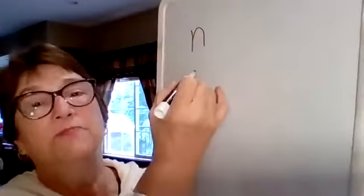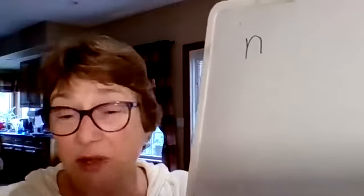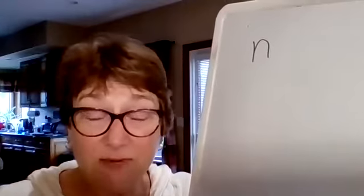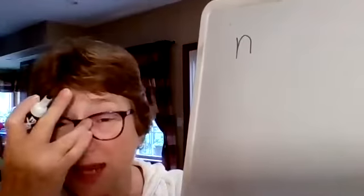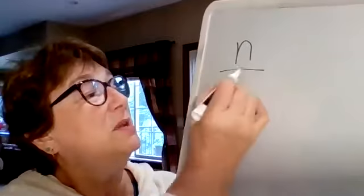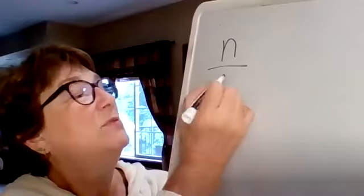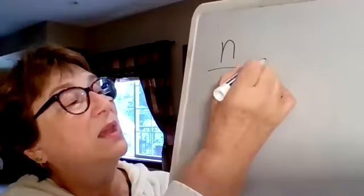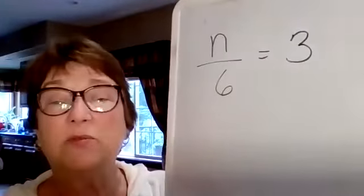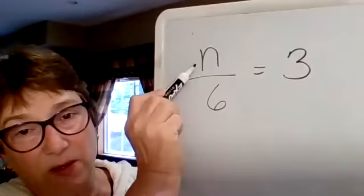Let's do another. How about this? Some number, and I can use any type of variable I want. I could use any letter in the alphabet I wanted. And for some young kids, they even use animal shapes or flowers. It can be anything just to stand in the place of a number. So some number divided by 6 will give us 3. This is our variable. The n is our variable.